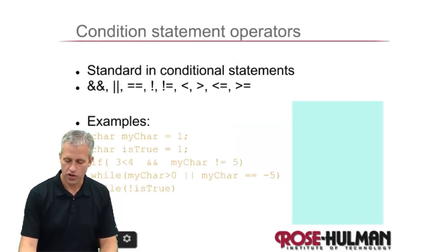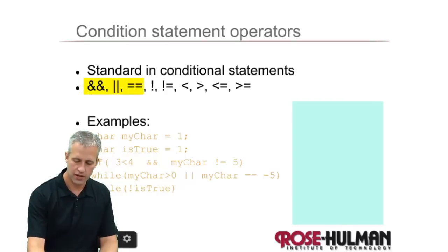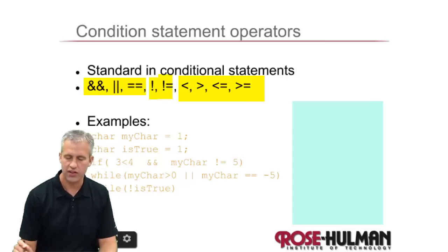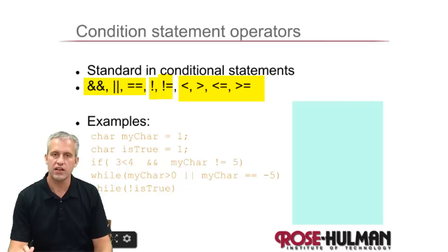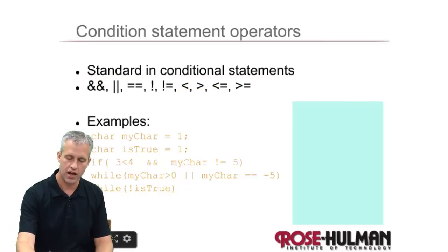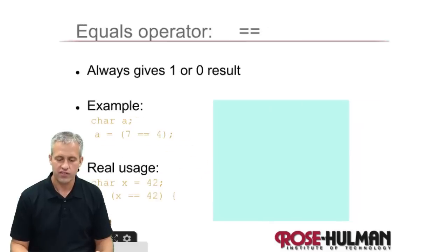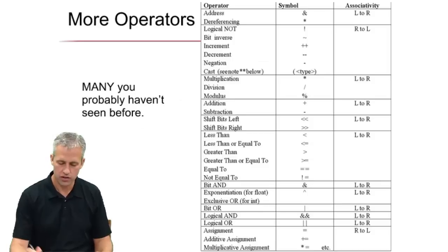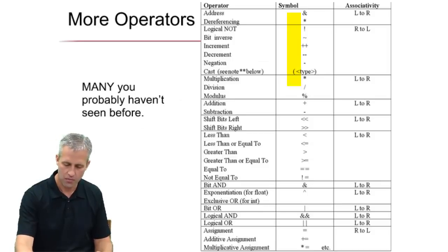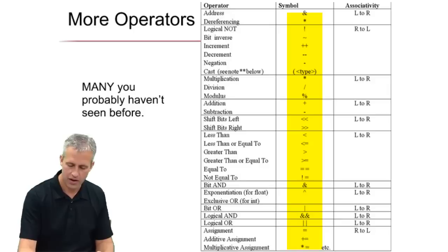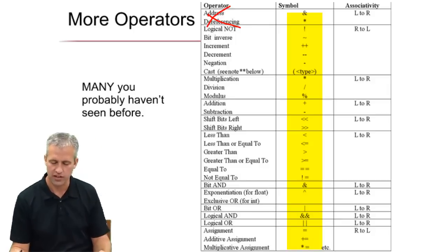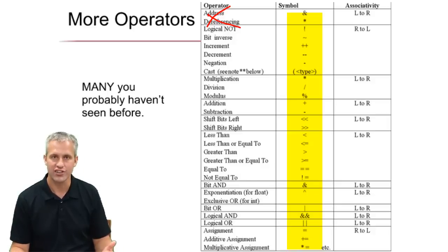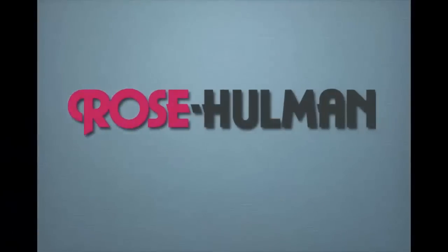There are more operators we'll cover when we start talking about if statements — the not, the not-equals, and less-than operators you're used to. When we get into if statements and more C, we'll hammer out all the details. That's kind of everything we've got with operators. Hopefully the table here — you now recognize a lot more on it. We are not going to talk about pointers, so we're not covering addressing and dereferencing, but most of the other things on there we've covered. That's it for today — see you next time.